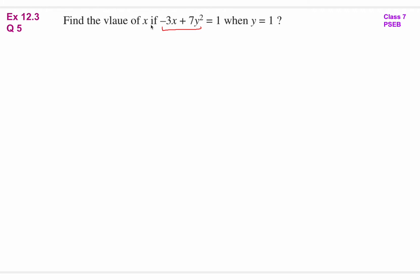For the given condition, you need to find x ki value. So what will you do? -3x + 7y² = 1. In this, you will put y ki value as 1, because this expression ki value is 1 when y = 1. This is given in the question. So put y ki value as 1 and find x ki value.